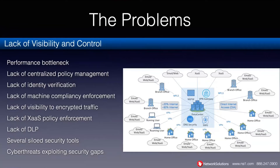This presents problems: the lack of centralized policy management, lack of identity services including identity verification, lack of machine compliancy enforcement, and the lack of visibility to encrypted traffic. Encrypted traffic masks threats — it's a privacy versus security challenge, and both are very important. There's also the lack of cloud policy enforcement and the lack of data loss prevention. This has really caused a lot of companies to implement several siloed security tools that are difficult to manage as a whole, and cyber threats are exploiting these security gaps.